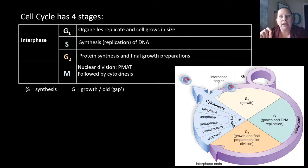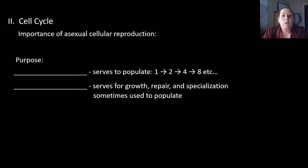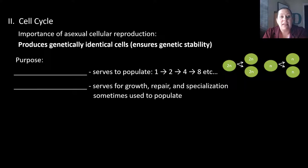Interphase is where most of the cell's time is spent, while the M phase — mitosis — is the actual division of the nucleus and cytoplasm. The importance of asexual cellular reproduction is that it produces genetically identical cells, ensuring genetic stability. We want to make sure that if the cell started with 2N, it ends with 2N — genetically identical to the parent it came from.